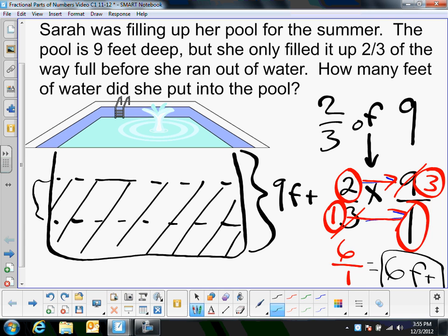So from here to here is, that's six feet. Each third, really, if you think about it, is three feet. So a third is three feet, two thirds is six feet, and then three thirds would be nine feet.